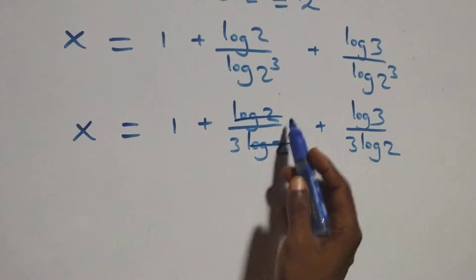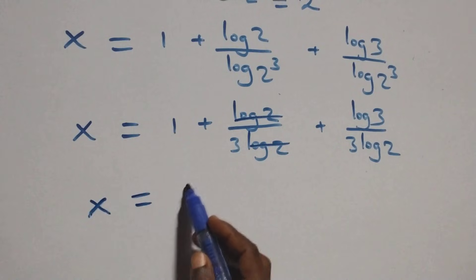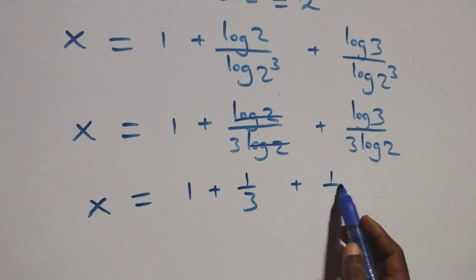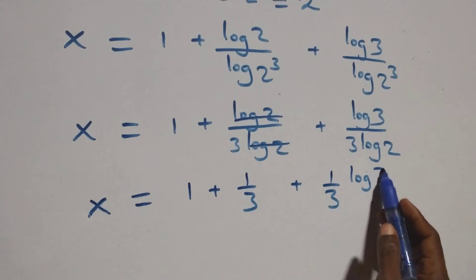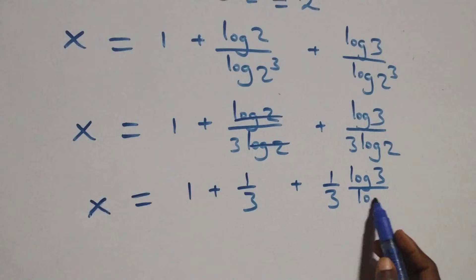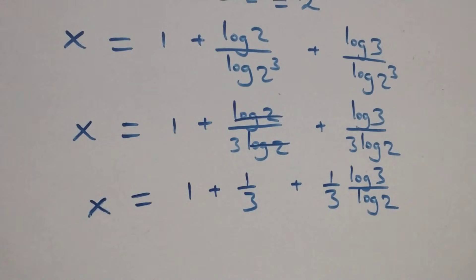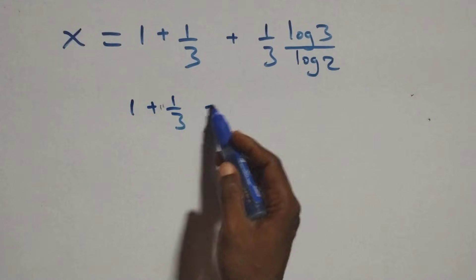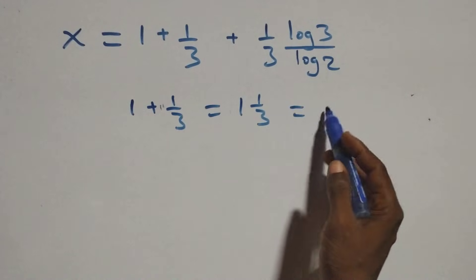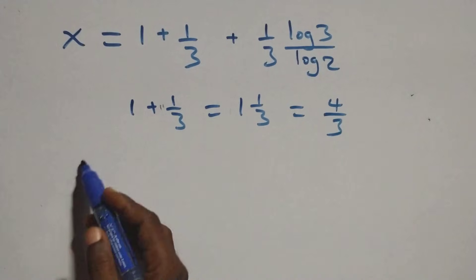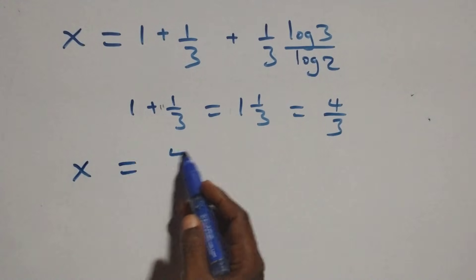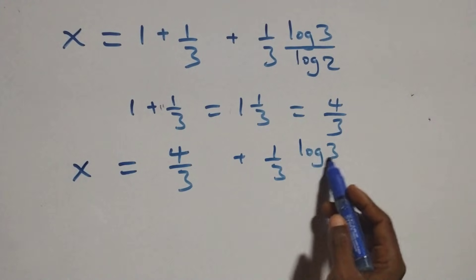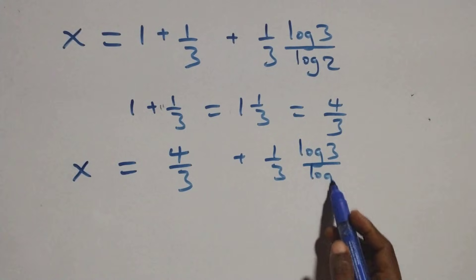Then here, log 2 cancels each other, so this becomes x equals to 1 plus 1 over 3, plus 1 over 3 times log 3 over log 2. Then at the next step, 1 plus 1 over 3 can be written as 4 over 3. At this, we have x equals to 4 over 3 plus 1 over 3 times log 3 over log 2.